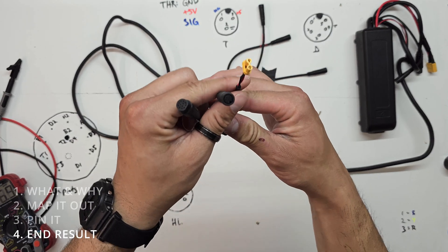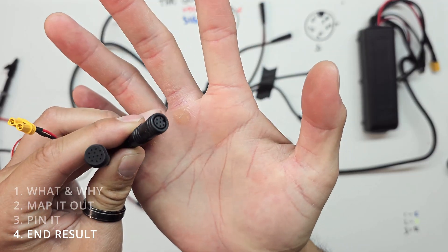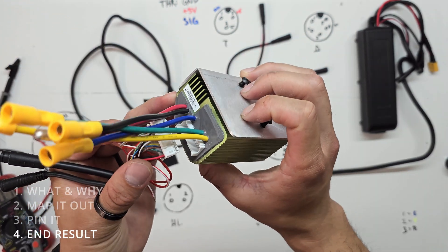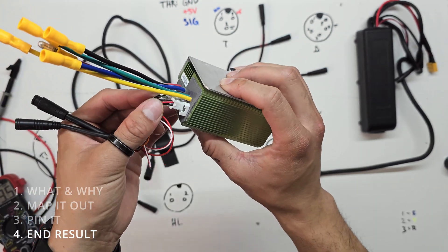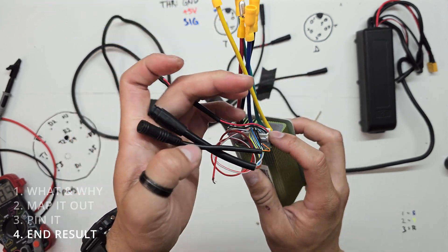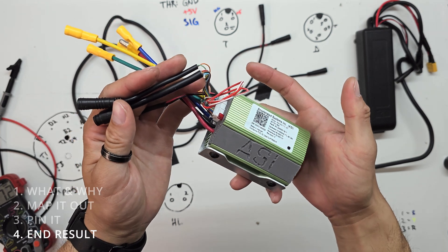Eventually, what we'll end up with is something that looks like this. This is a portion of our production harness. These are the stock connectors connected into this JST. And this JST is actually what connects into our controller. So now we have a direct line from our controller into the stock connectors. And we don't have to worry about anything else. This is our harness.